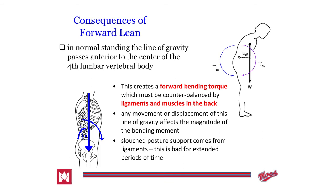Any movement that affects the line of gravity going further in front of or behind our center of mass is going to affect the magnitude of what's called the bending moment — essentially the torque that is caused. When we have a slouched posture, we are strictly relying on the ligaments of our posterior chain to counterbalance that movement, which over time is going to cause pain and discomfort specifically in the lumbar region.